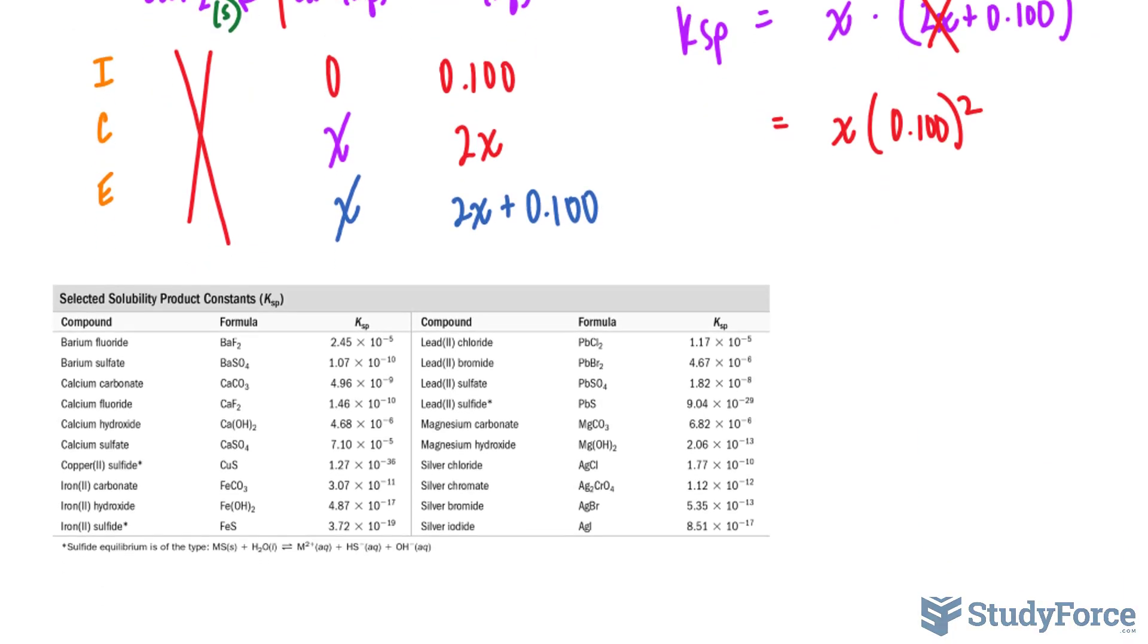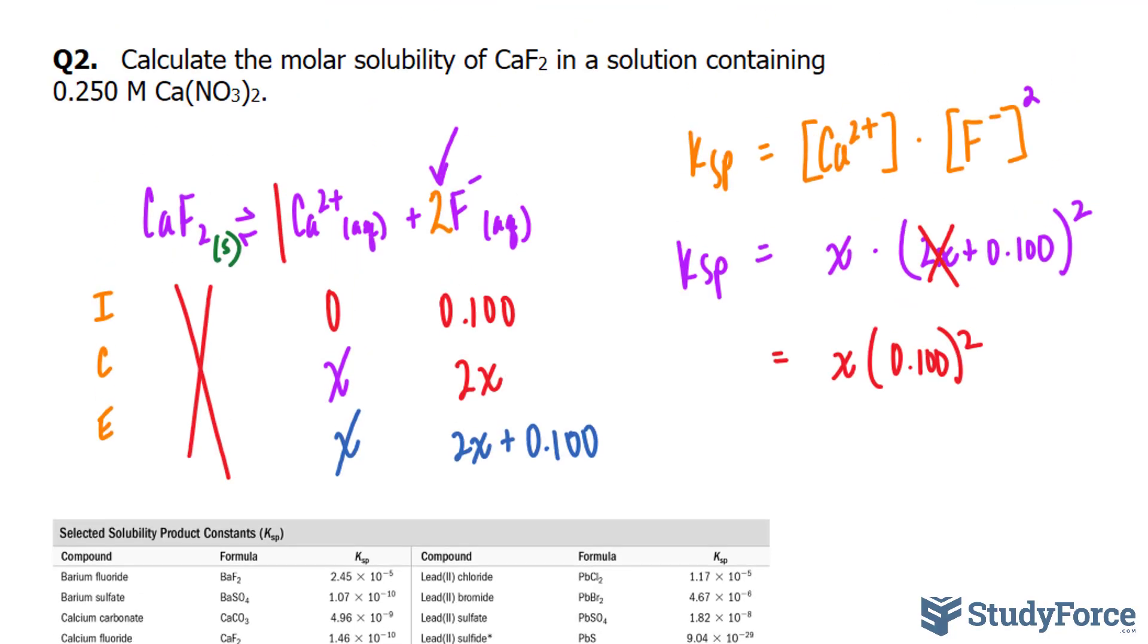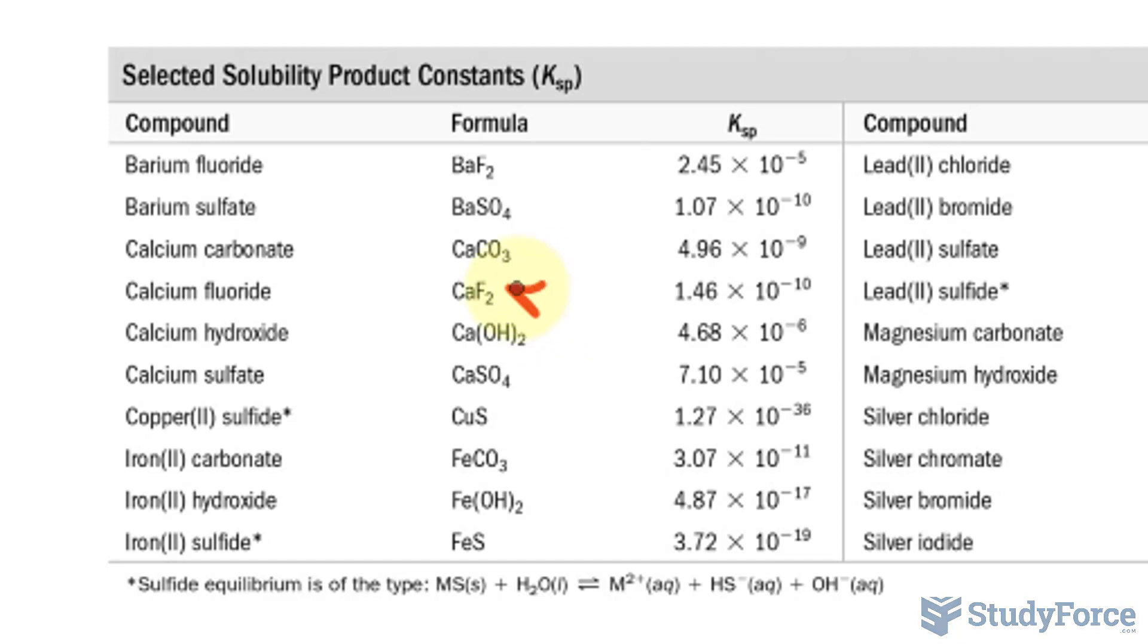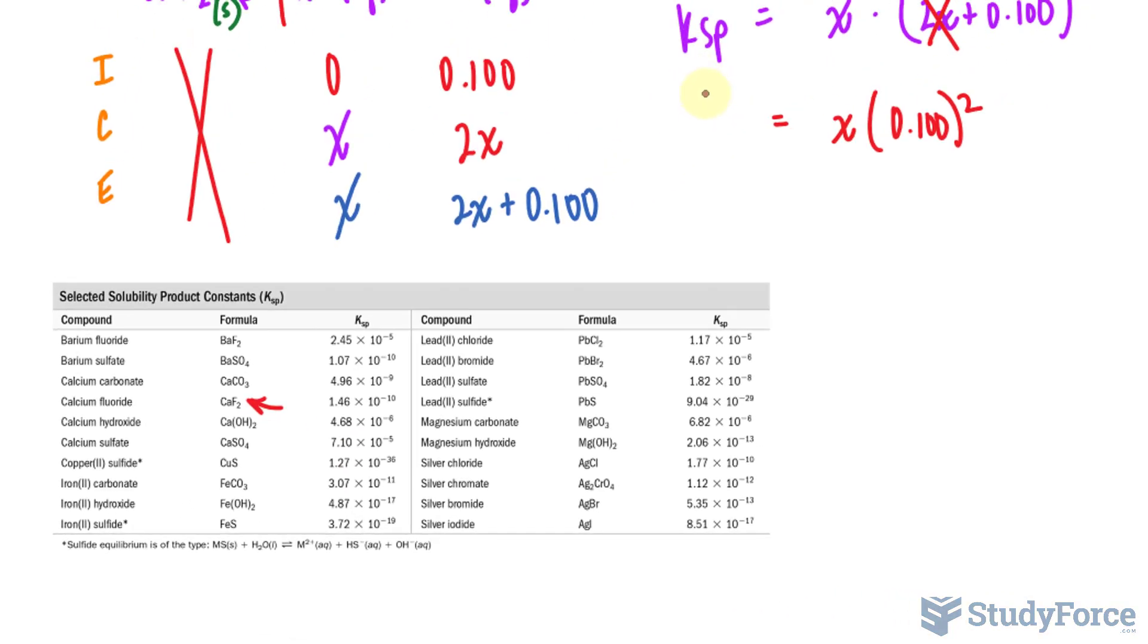So I will find calcium fluoride in here, and it's right there. Calcium fluoride. Its Ksp is 1.46 times 10 to the power of negative 10. So I'll place that right here. 1.46 times 10 to the power of negative 10.